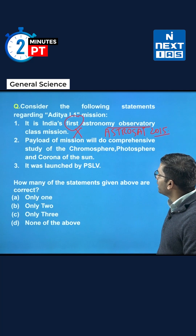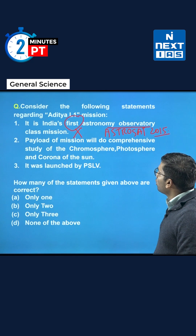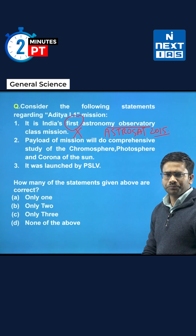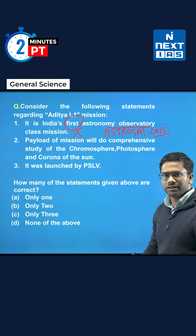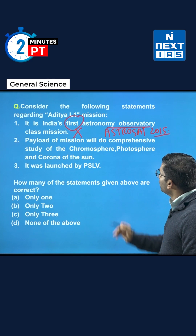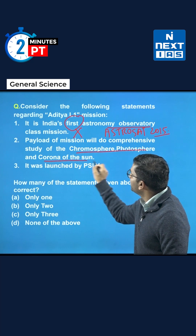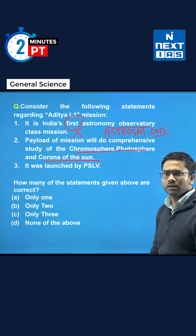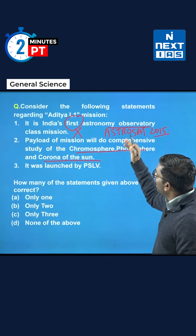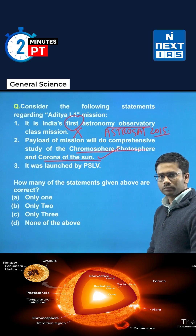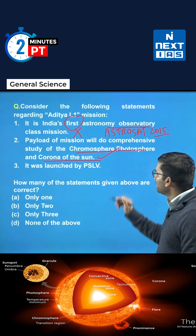The second statement says that the payload of the mission will do a comprehensive study of the chromosphere, photosphere, and corona of the sun. If we see the objective of the Aditya L1 mission, it will study the atmosphere of the sun, solar storms, and their impact on Earth's environment. These three are the outer layers of the sun studied by the mission, so this statement is correct.